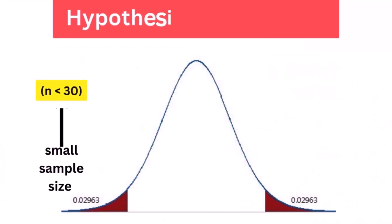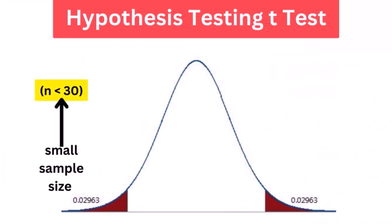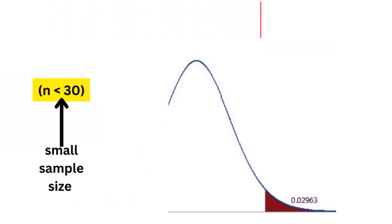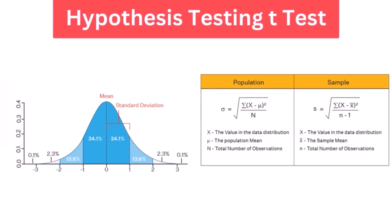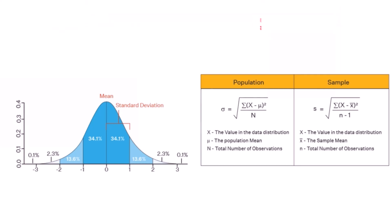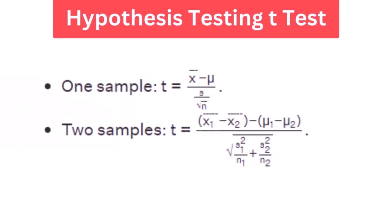2. Hypothesis testing T test: The T test is another method of hypothesis testing that is used for a small sample size. It is also used to compare the sample mean and population mean. However, the population standard deviation is not known; instead, the sample standard deviation is known. The mean of two samples can also be compared using the T test.